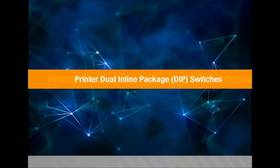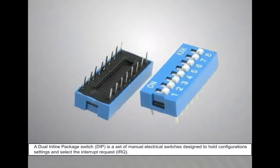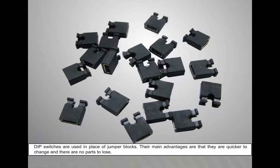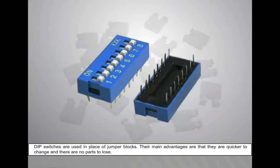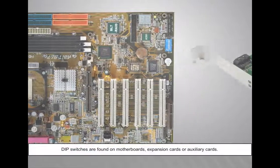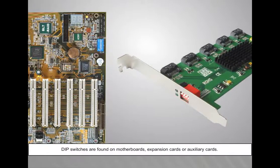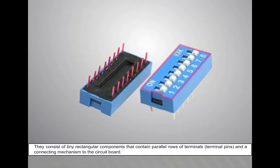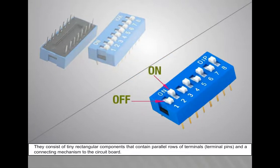Printer Dual Inline Package (DIP) Switches: A DIP is a set of manual electrical switches designed to hold configuration settings and select the interrupt request (IRQ). DIP switches are used in place of jumper blocks; their main advantages are that they are quicker to change and there are no parts to lose. DIP switches are found on motherboards, expansion cards, or auxiliary cards. They consist of tiny rectangular components containing parallel rows of terminal pins and a connecting mechanism to the circuit board.